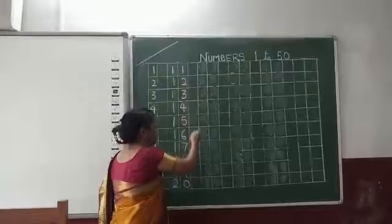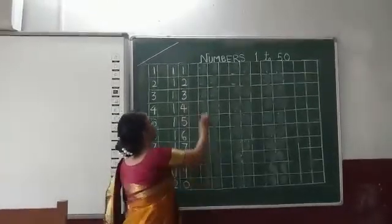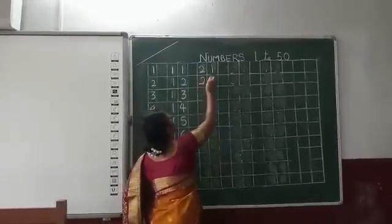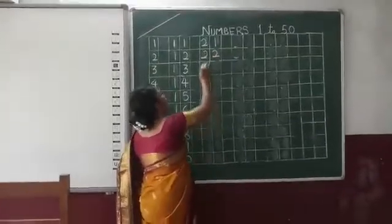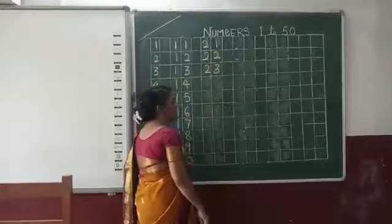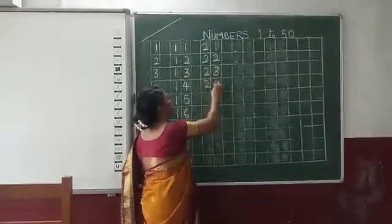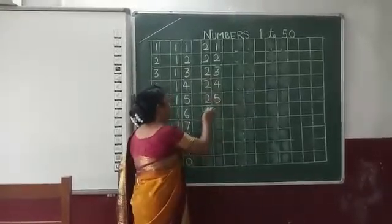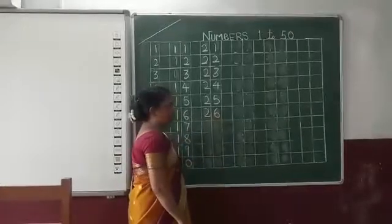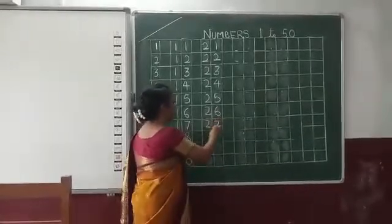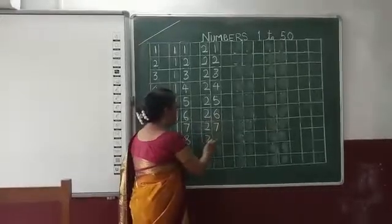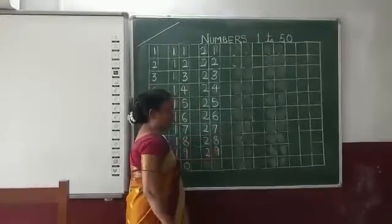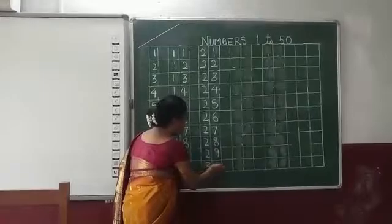Now leave one line again in between and start writing 21. 2, 1, 21. 2, 2, 22. 2, 3, 23. 2, 4, 24. 2, 5, 25. 2, 6, 26. 2, 7, 27. 2, 8, 28. 2, 9, 29. 3, 0, 30.